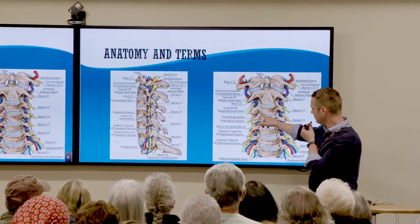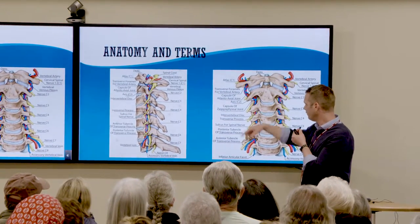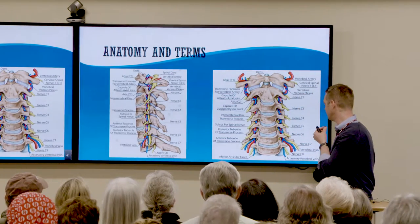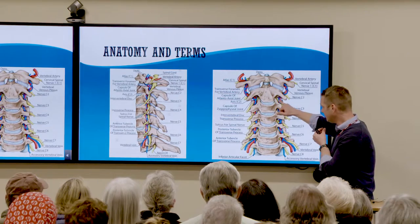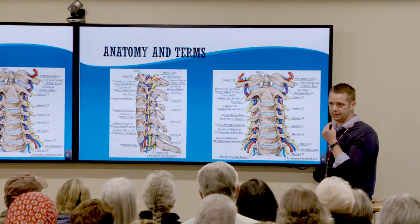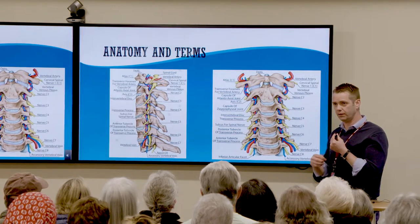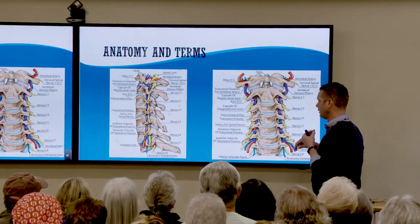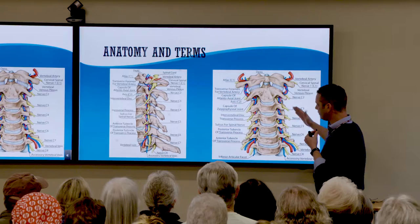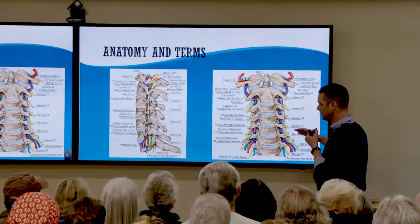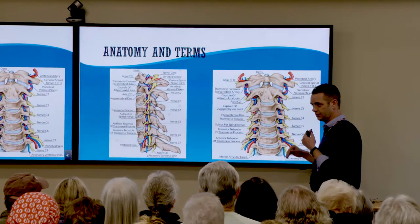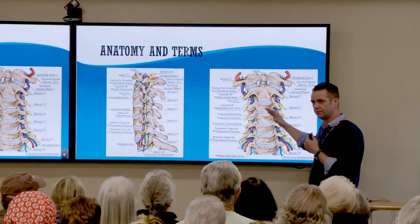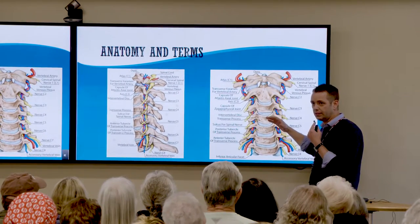One of the other things the discs do — if you notice these yellow things in the image — the body doesn't color-code these things for me, unfortunately, but they give space for the nerves to exit at each level. We all have more or less the same wiring, and each of these nerves does different things. So when I'm listening to you, I'm correlating your symptoms to this mental knowledge of what you're made of.